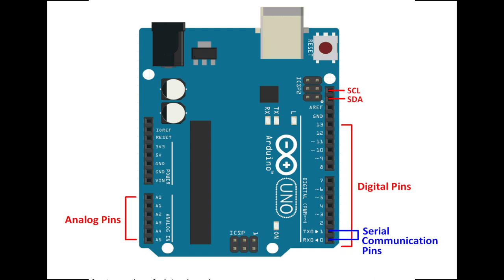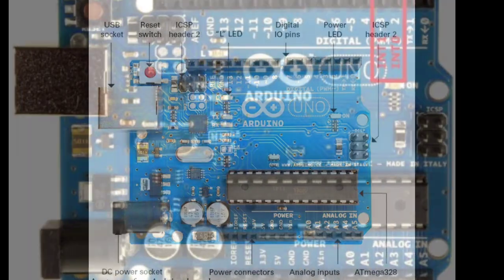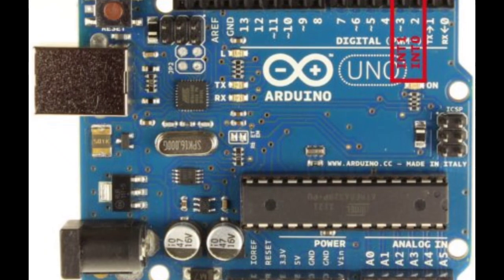The next pin is called external interrupt pin. This pin of the Arduino board is used to produce the external interrupt. Suppose if we want to give some instruction to the board, then we use these interrupts. Interrupt is a process by which Arduino stops its regular task or stops its looping and goes to interrupt function to complete its given interrupt function task created externally. There are only two external interrupt pins in Arduino — pin 2 and 3.